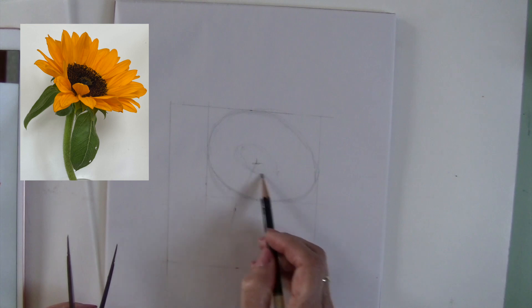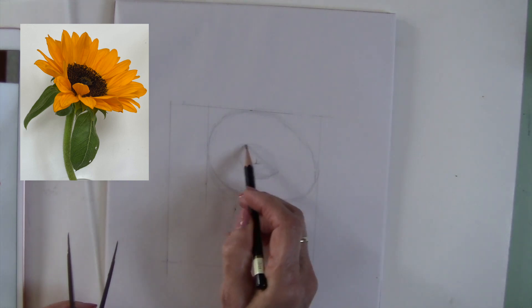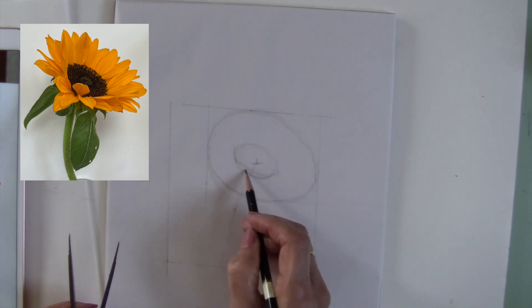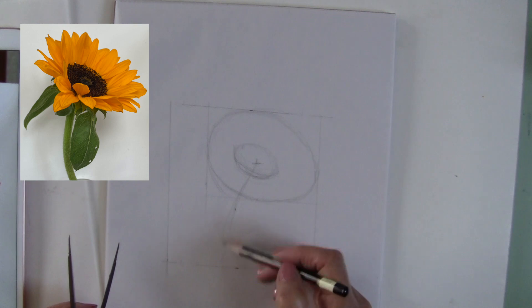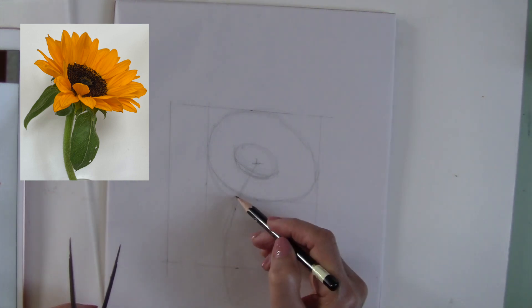After measuring I'll do the center ellipse, and then from there I will draw in the stem. And at this stage this is all sketchy right now.